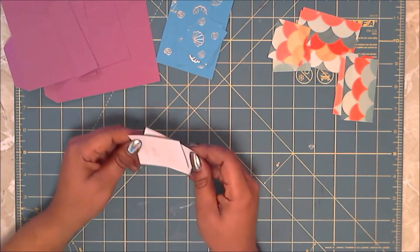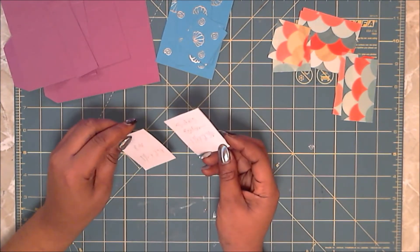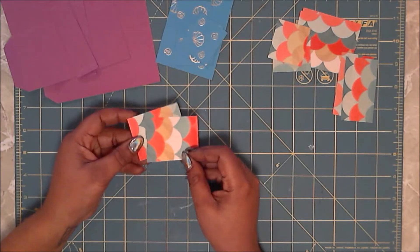And finally you are going to need two more pieces measuring at one and seven eighths by two and three eighths.